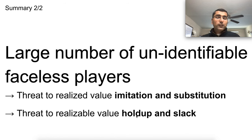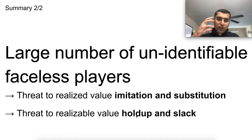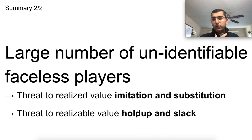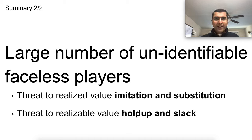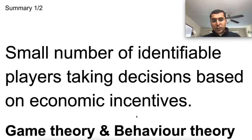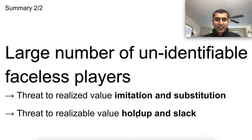When you have large numbers of potentially unidentifiable, faceless competitive players, the approach is very different. You then have to check for different ways they will compete with you. The first is a threat to realized value — value you've already added — through imitation or substitution. The second is an internal threat: hold-up from various entrenched processes, and built-in slack. So for unidentifiable players, focus on these four areas: imitation, substitution, hold-up, and slack.